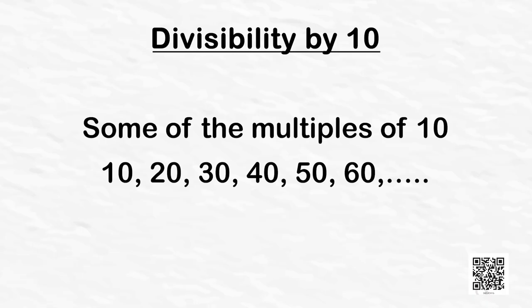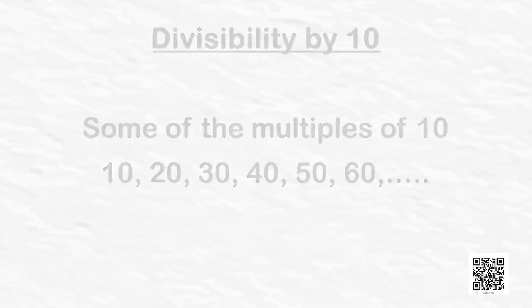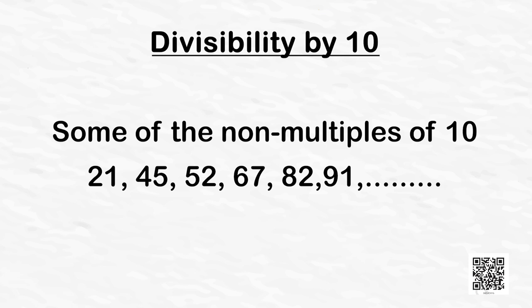Firstly, let's look at divisibility by 10. Indeed this is the easiest of all. Look at some of the multiples of 10: 10, 20, 30, 40, 50, 60 and so on, and observe some of the non-multiples of 10: 21, 45, 52, 67, 82, 91. From the above list, it is clear that whenever the units digit is 0 it is a multiple of 10, and when the units digit is not 0 it is not a multiple of 10. So we get a test of divisibility by 10, but let's see how it works.